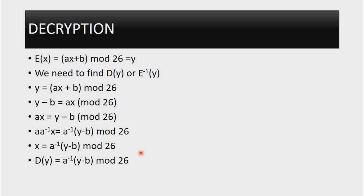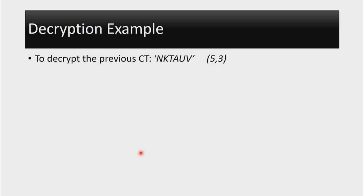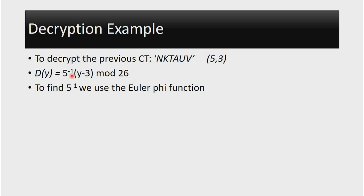To make things clearer, let us look at a decryption example. We'll try to decrypt the original message using the same key. We encrypted 'crypto' and found the ciphertext to be NKTAUV, so we have to decrypt it using the decryption formula. Since our A is 5, the formula requires us to use the inverse of A, and we subtract B, which is still 3. The first thing is to find the inverse of 5. To do so, we'll use the extended Euclidean algorithm. For those who do not know it, you can check the last video.